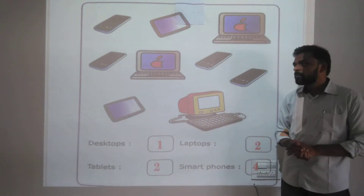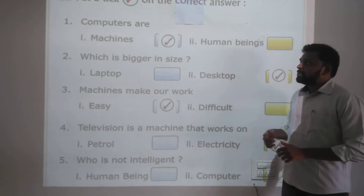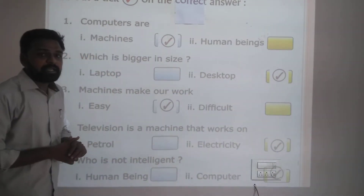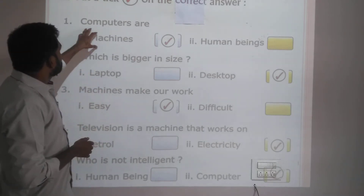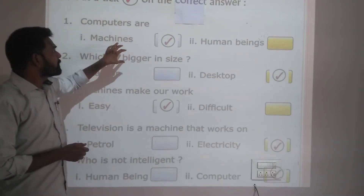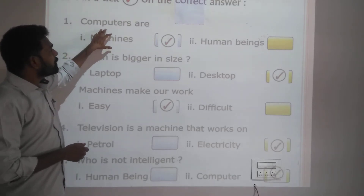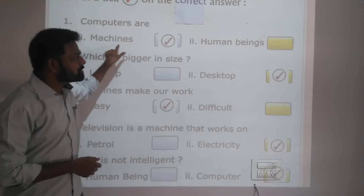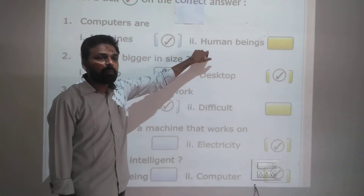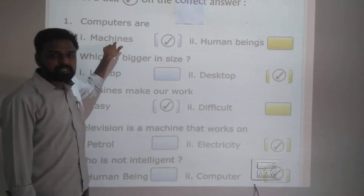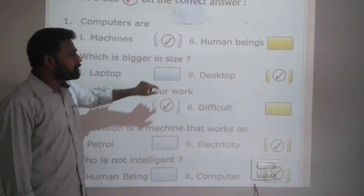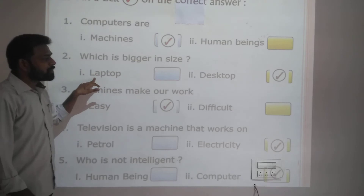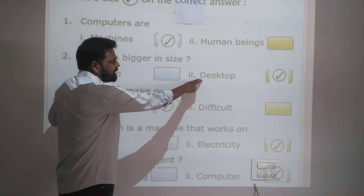Then there is a third question: put a tick on the correct answer. Which is bigger in size — option 1: machines, option 2: human beings? Now looking at computer family members, this one is a desktop and one is a laptop.